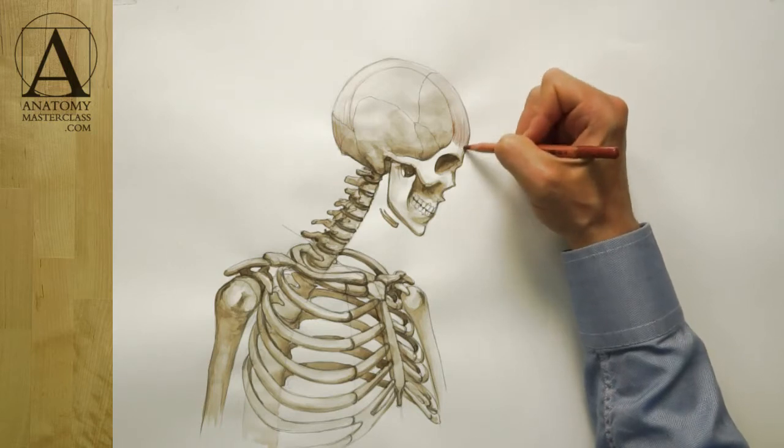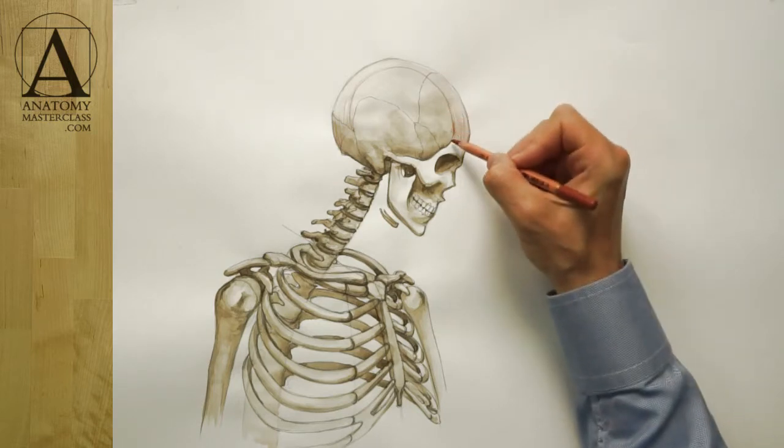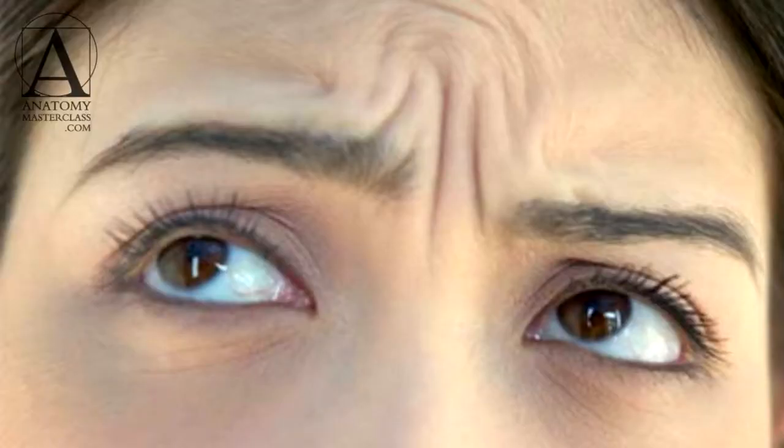This forehead muscle can produce different expressions on a face. Contraction of both left and right portions elevates the eyebrows, giving an impression of surprise or disbelief. When only one side is contracted, one eyebrow is lifted, expressing bemusement or distrust. Not every person can produce such action of the forehead muscle. This muscle can also lift upward the inner corners of the eyebrows, making an expression of sadness or grief.